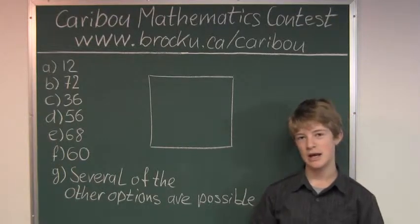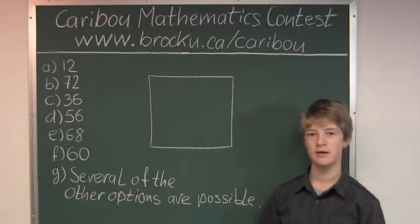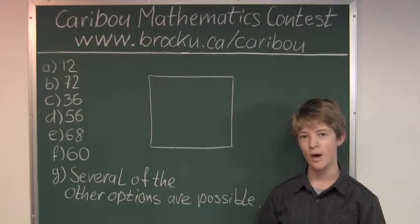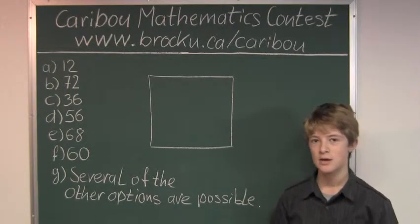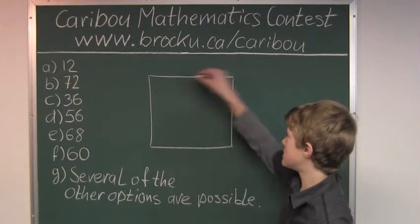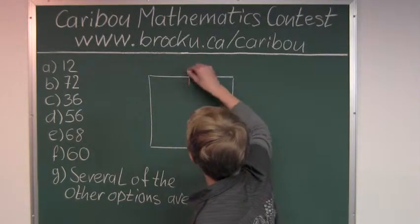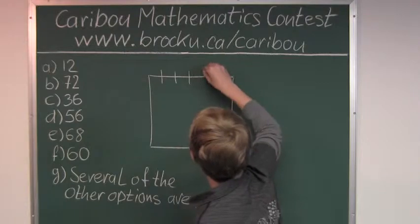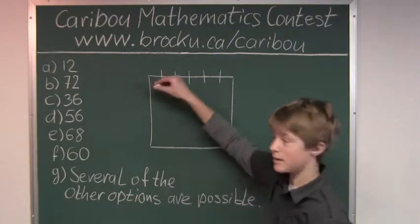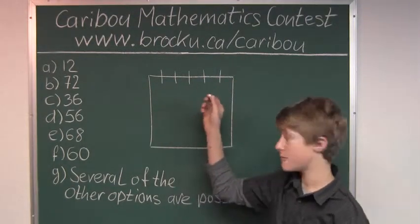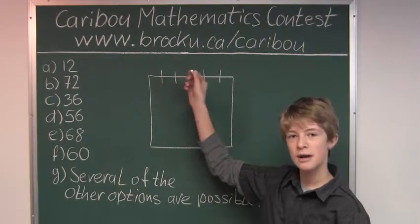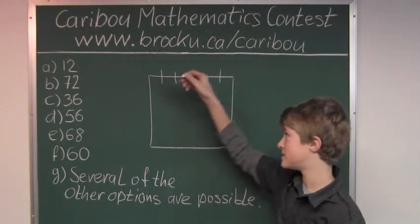So the question is, if the length of a side of a square is divisible by 6, what could the perimeter be? If we know that, for instance, this side is divisible by 6, then we know that the other three sides also have to be divisible by 6 because it is a square and all the lengths of the sides are the same.